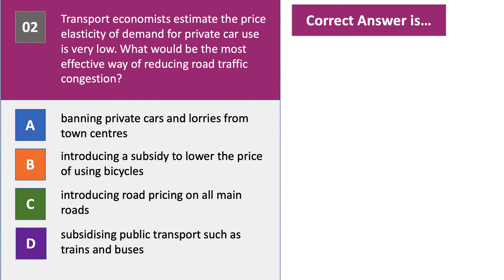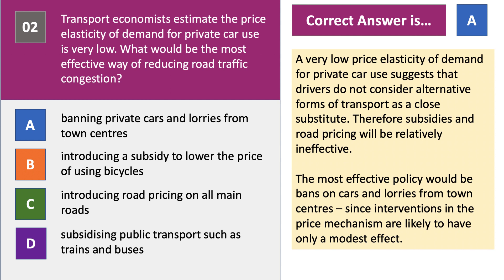The right answer to question two is A. Banning cars from town centres is the most effective way. Very low price elasticity suggests that drivers, the users of these vehicles, don't consider bicycles or public transport as close substitutes. If you subsidise bicycles or public transport, the impact will be relatively low because demand is inelastic. The most effective policy, if you want to target congestion, is to ban cars — perhaps on certain days or at certain times. That intervention would have a bigger effect compared to a subsidy or road pricing.